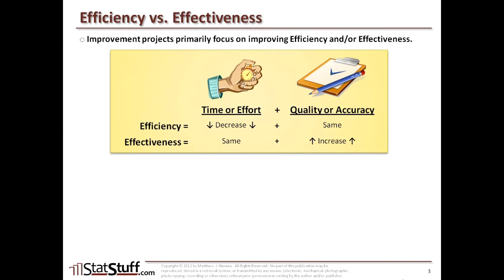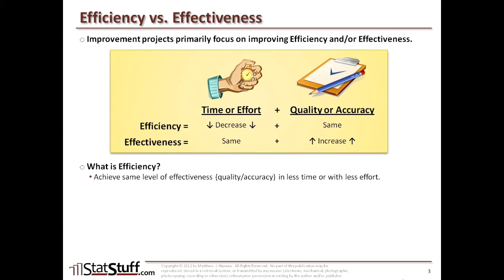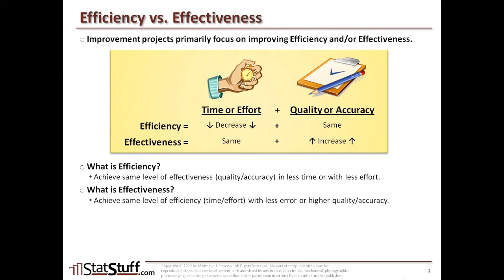Using an illustration: efficiency basically means you want to achieve the same level of effectiveness — the same exact level of quality or accuracy — but you want to do it in less time, with less effort, less cost, or with less energy. Effectiveness is the opposite: you want to achieve the same level of efficiency — the same time, effort, energy, or cost — but you want to do it with less error, improving the quality or accuracy of what's coming out of the process. So they have an inverse relationship: efficiency says don't compromise quality but improve the time or effort involved, while effectiveness says don't compromise the time or effort but improve the quality or accuracy of the outputs.